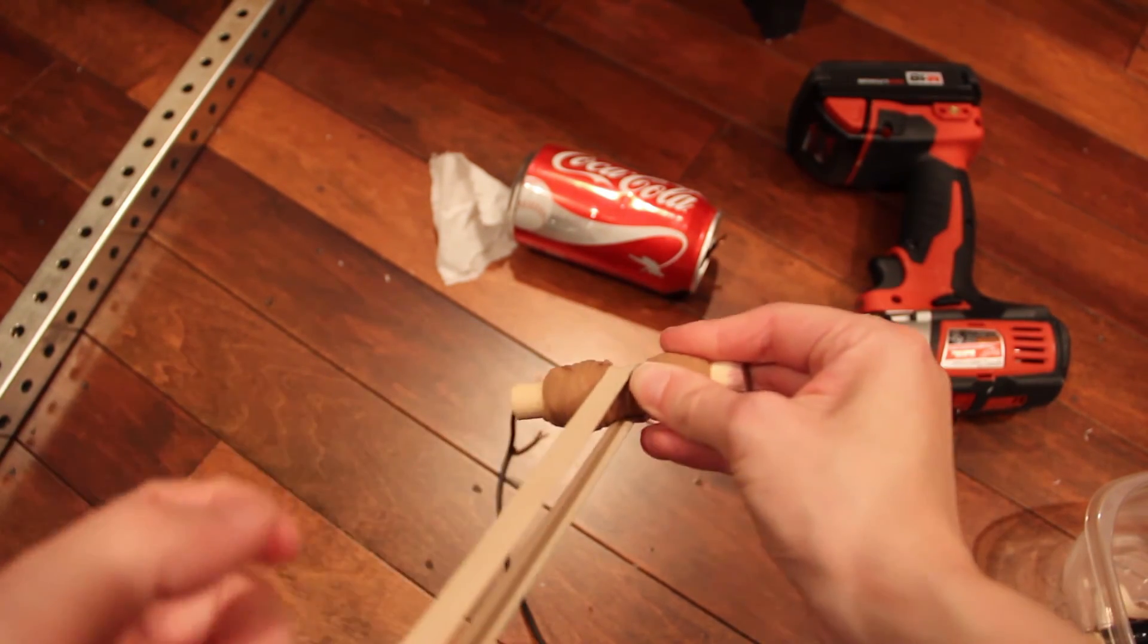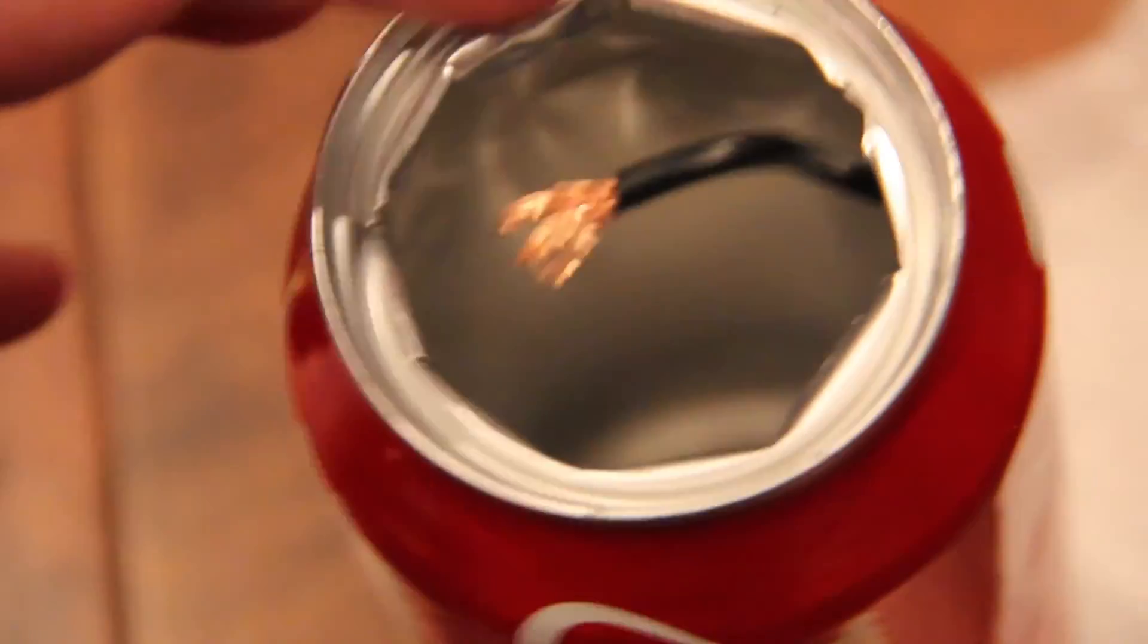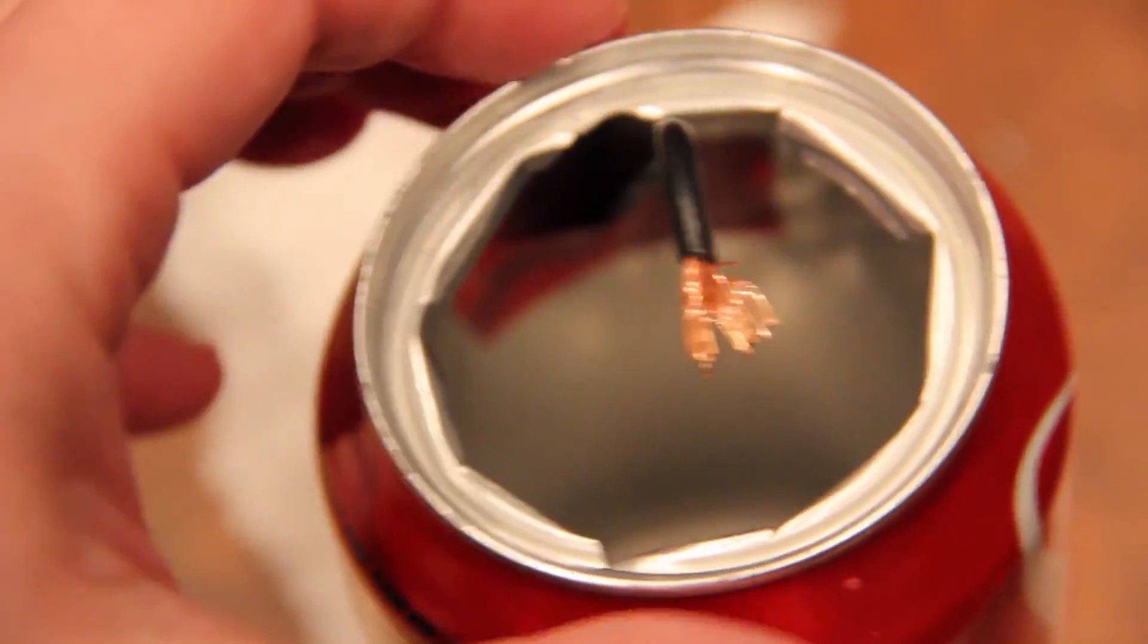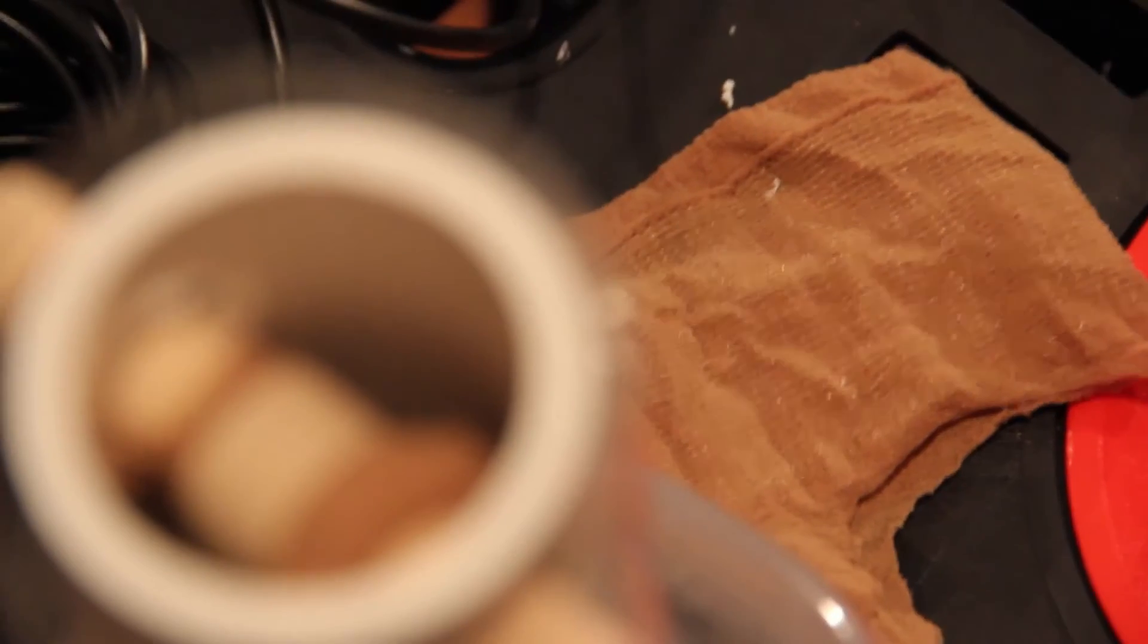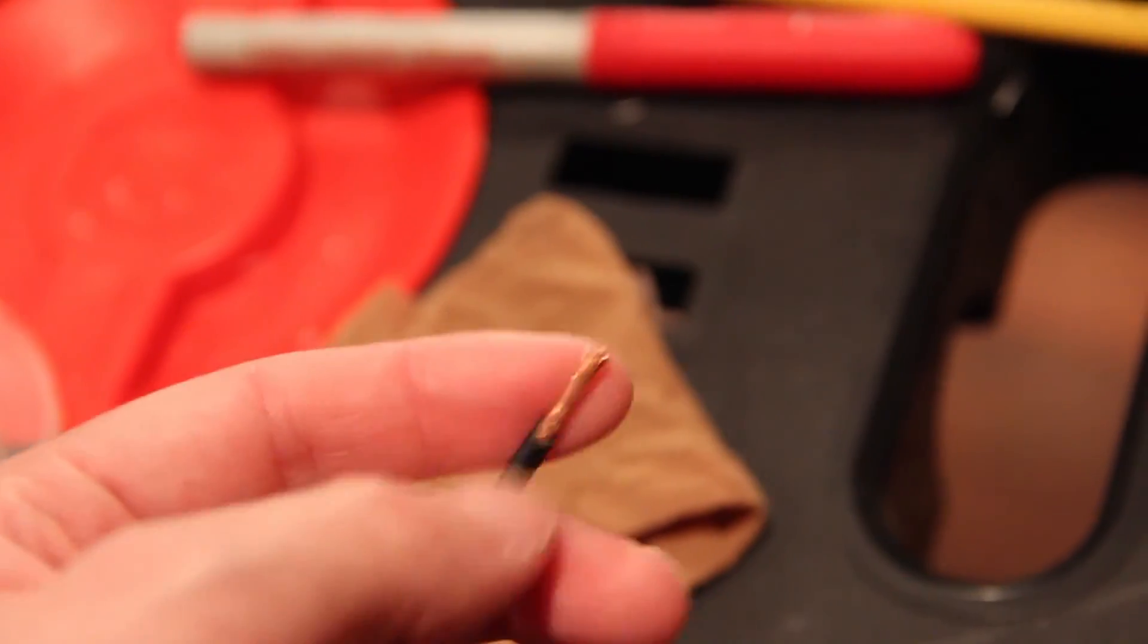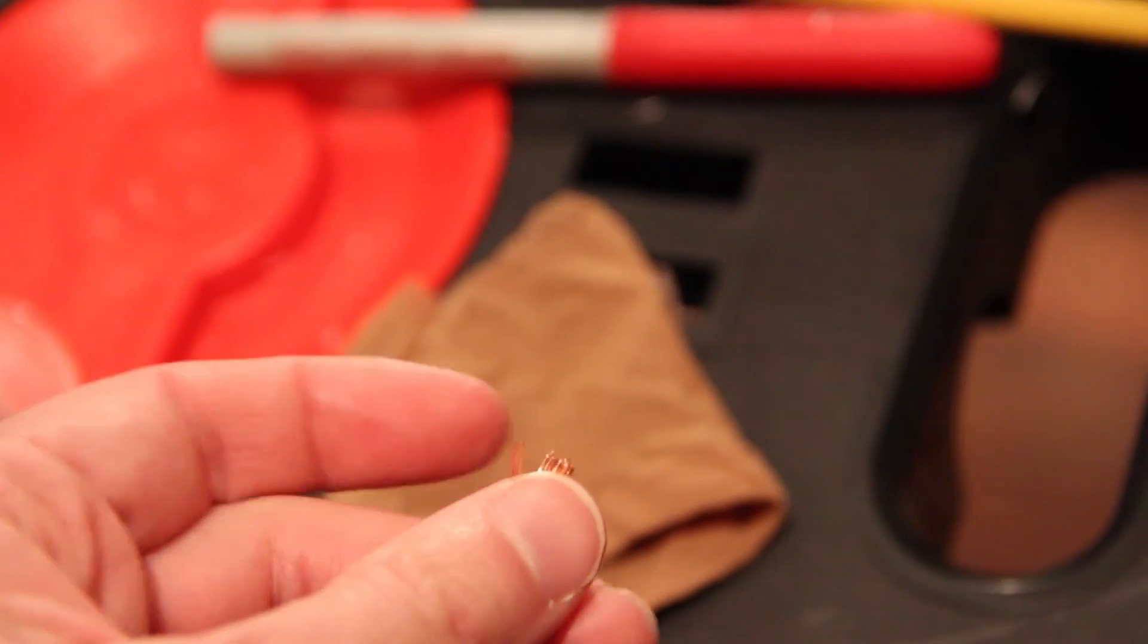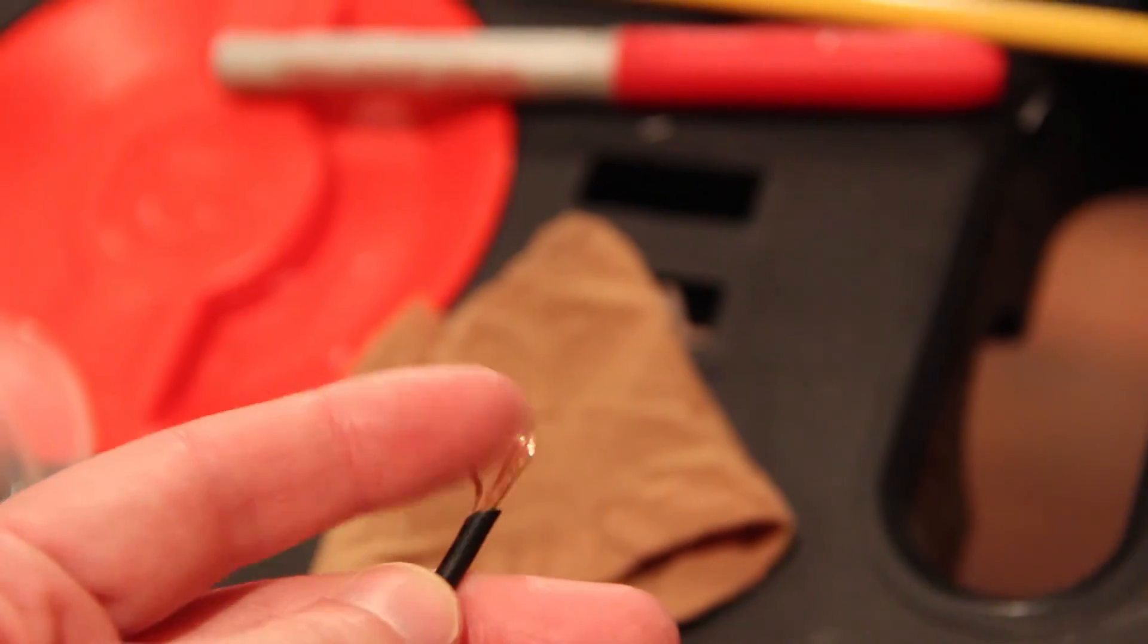Carefully cut the top off a soda can to make a dome. Strip a piece of stranded wire and attach one end to the inside of the soda can. The other end should hover just above the upper roller and spread out the strands to make it like a comb-like structure.